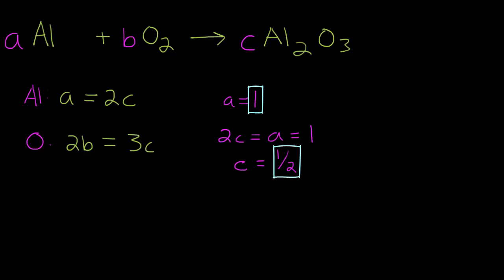And now we're going to use the oxygen equation to solve for B. So we have 2B equals 3C, but we just solved C and C is 1 half, so that's 3 times 1 half, so 3 halves. And we're going to divide both sides by 2, so we have B equals 3 fourths.